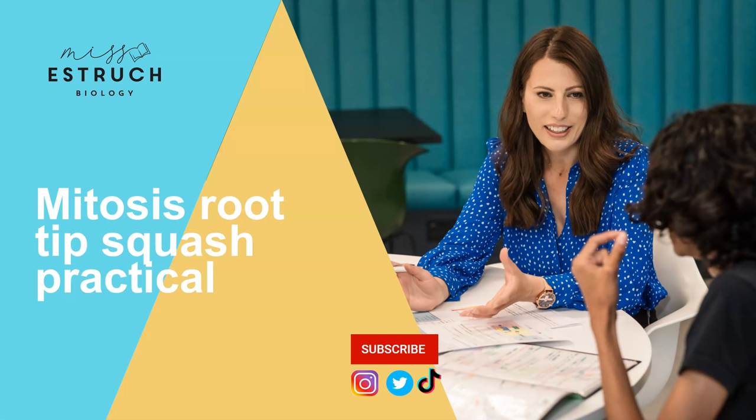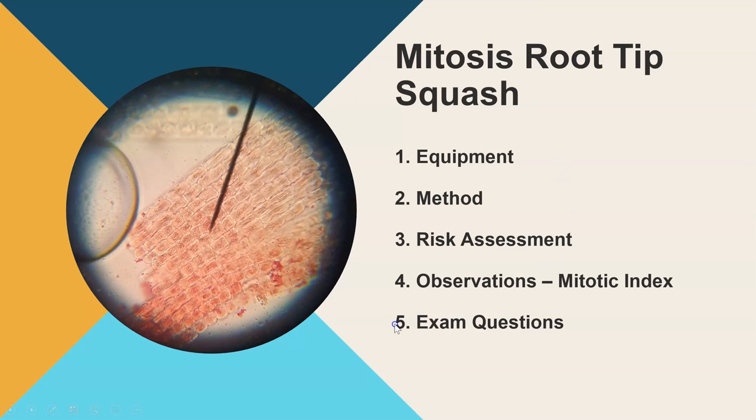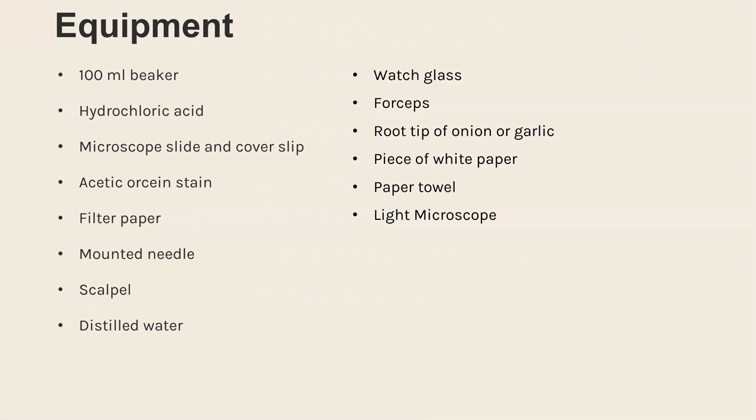Hello and welcome to Miss Estric Biology. In this video we're going to go through the mitosis root tip squash required practical. If you are new here then click subscribe so you don't miss out on any of the latest videos. So this practical is the one where you have to prepare a stained squash of cells and then work out the mitotic index. And we're going to go through the equipment method risk assessment, how you then work out the mitotic index and the typical exam questions you get linked to this required practical.